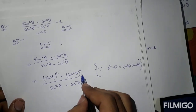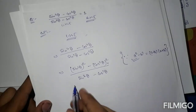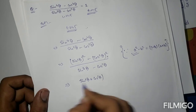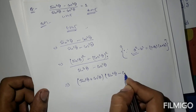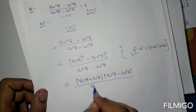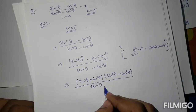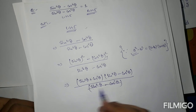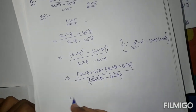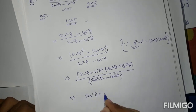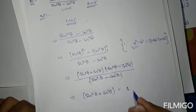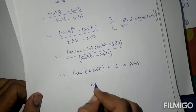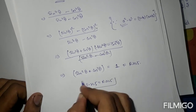We factor the numerator as (sin²theta minus cos²theta) times (sin²theta plus cos²theta). The (sin²theta minus cos²theta) in numerator and denominator cancel each other. We are left with sin²theta plus cos²theta, which equals 1. This equals our RHS, so LHS equals RHS, hence proved.